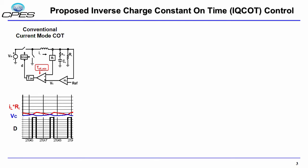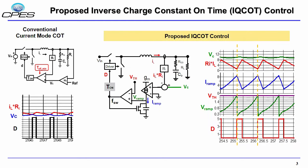On the left, we can see the conventional constant on time current mode control where inductor current and VC create the duty cycle. In the proposed IQ-COT, instead of the VC and inductor current ripple, we use the difference to charge the cap to generate the duty cycle.